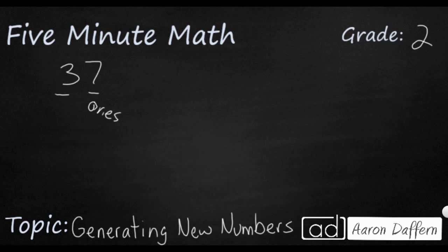This 3 is sitting in the tens place. So that means we have three tens. So that's really 30. So 30 and 7 that makes 37.